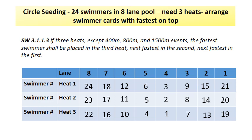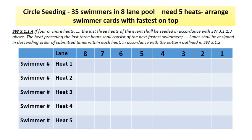What happens if you have more than three heats? In this example we have 35 swimmers in an eight-lane pool in a prelims event seated slowest to fastest. You will need five heats to accommodate these 35 swimmers. Make sure to arrange your swimmer cards with the fastest swimmer on the top. The seating rule SW 3.1.1.4: if four or more heats, the last three heats of the event shall be seated in accordance with SW 3.1.1.3.